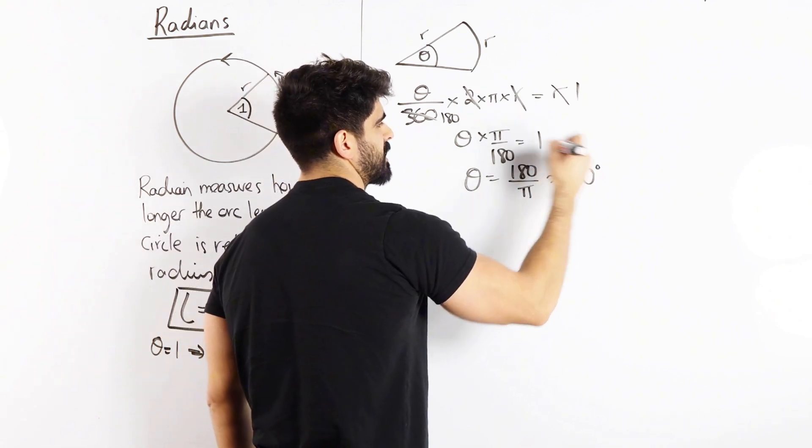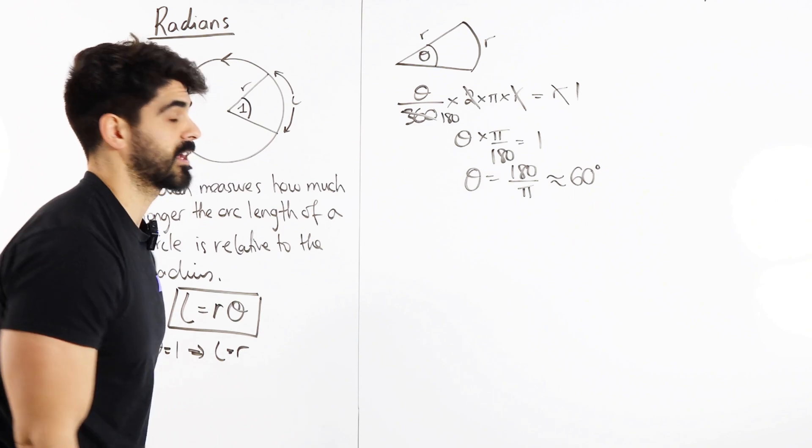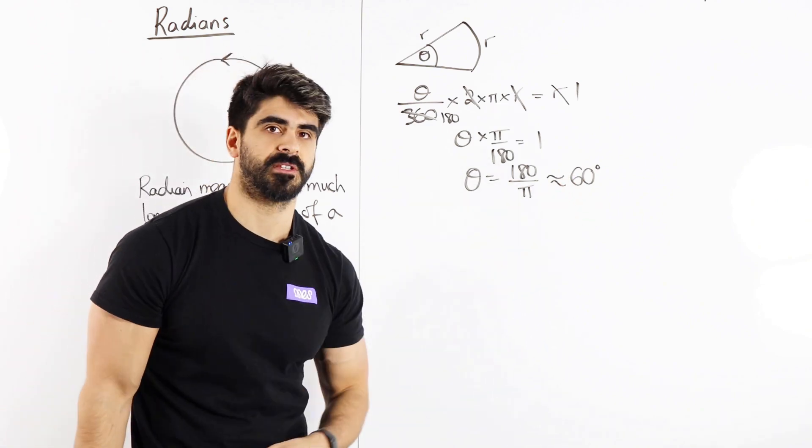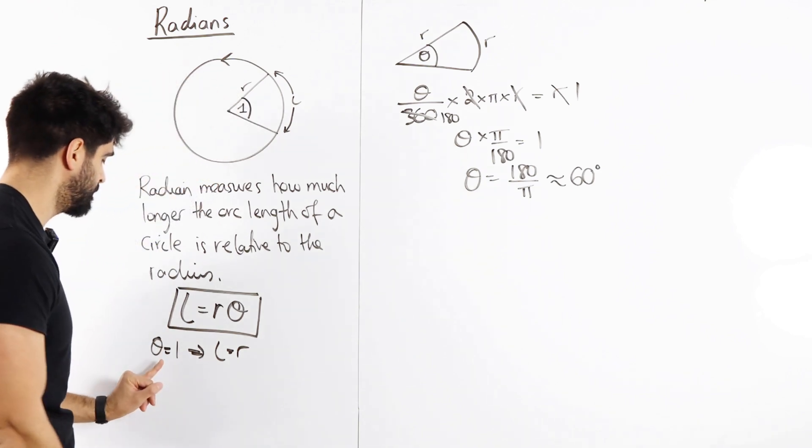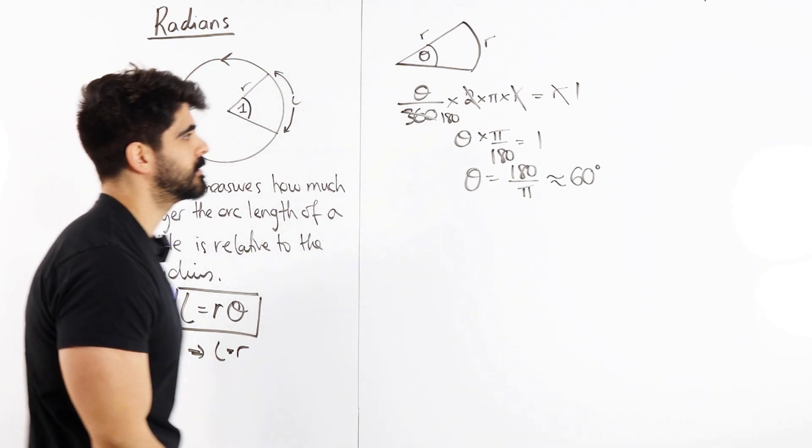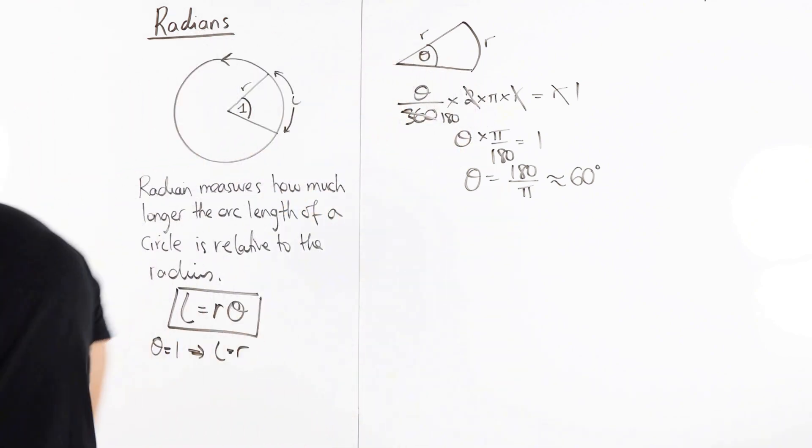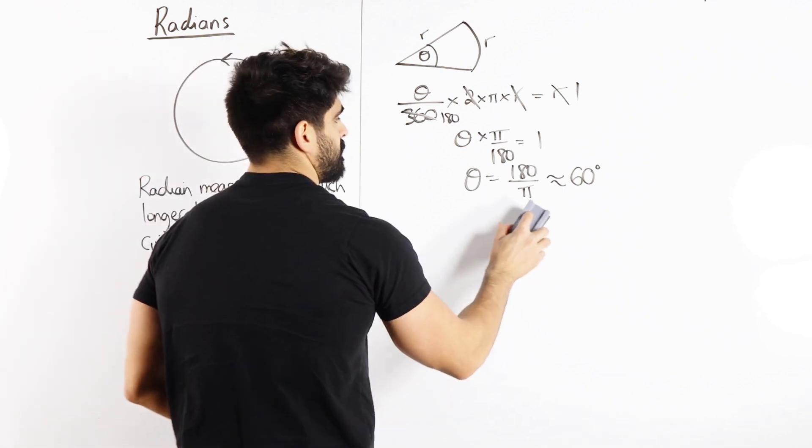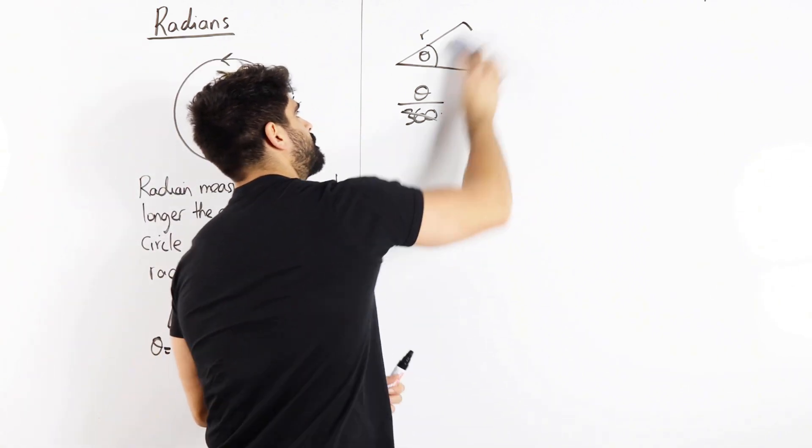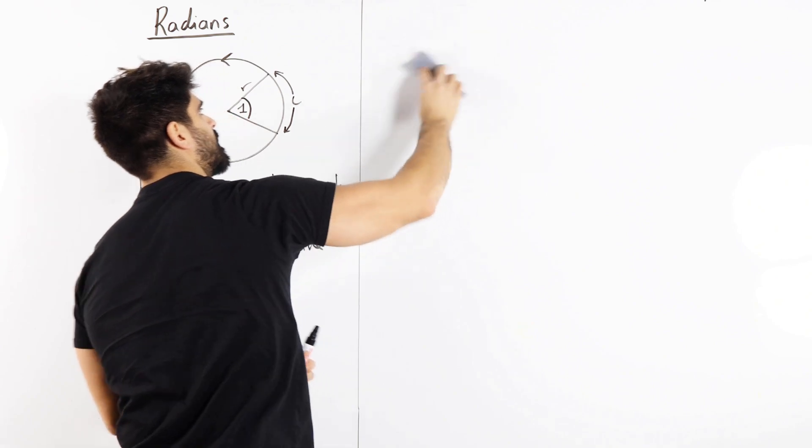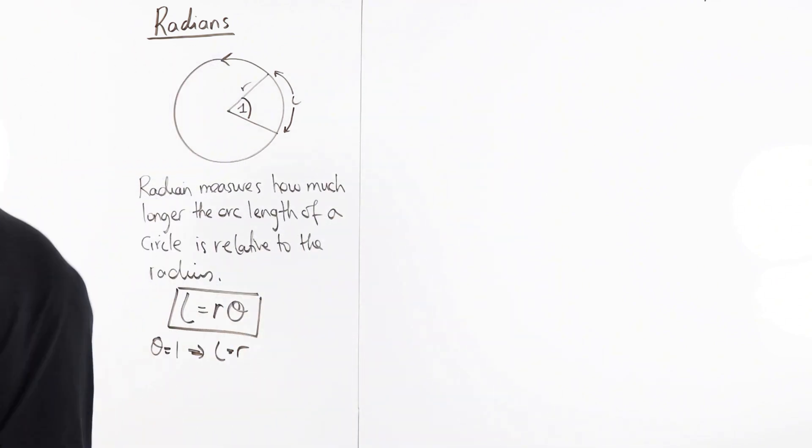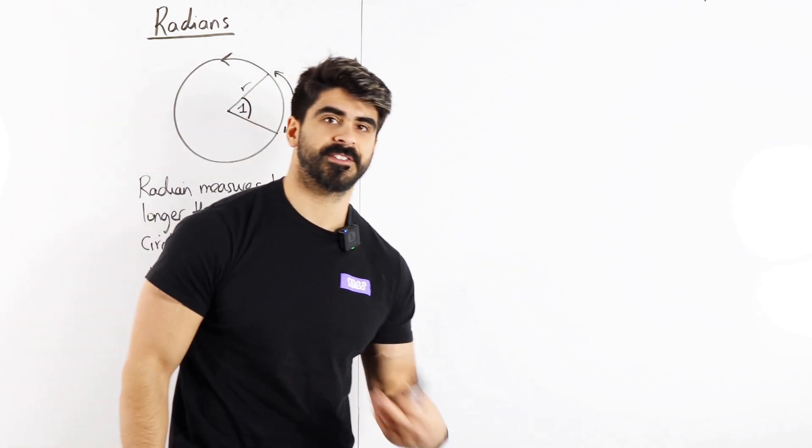Now if you type that in your calculator, it's a little bit less than 60 degrees. But just for this sake, I'm just going to say it's about 60 degrees. That's not exact. That's what approximation means. So 1 radian is about 60 degrees. But there is a better conversion for this.